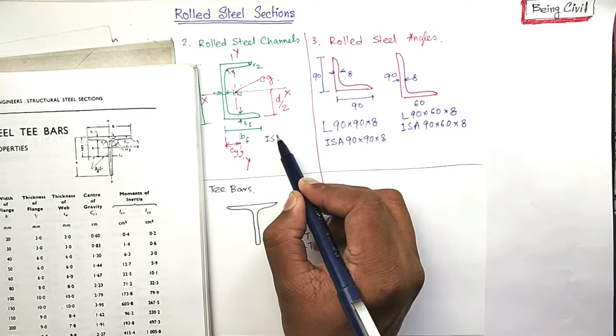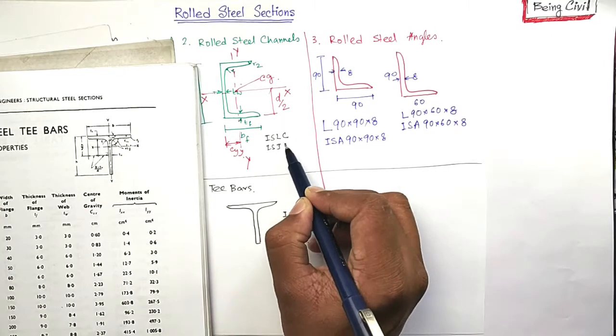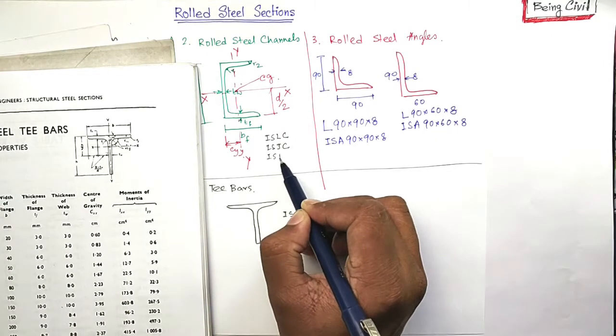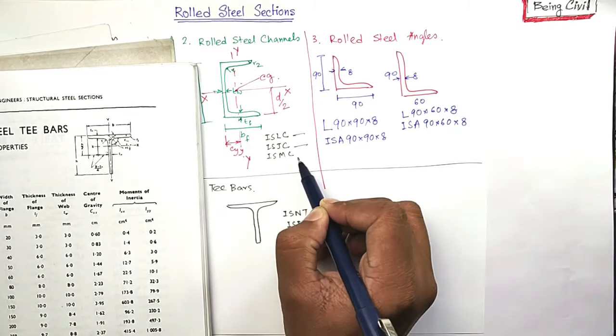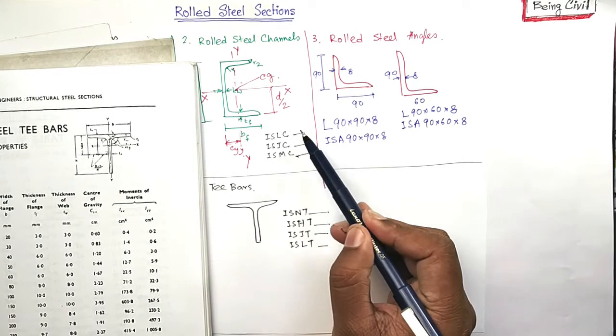It is designated as ISLC, ISJC, ISMC, like this. All here, you have to put the depth.